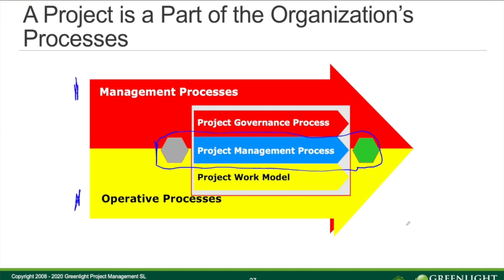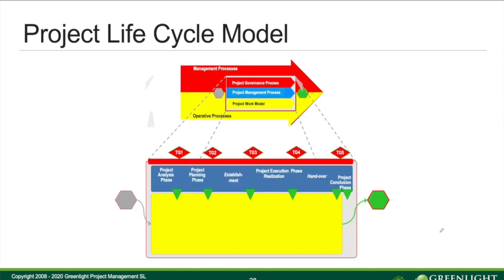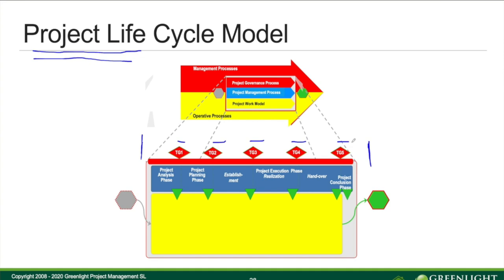So we then also have the blue color, and the green color represents the deliverables we will have from the project. In the GPMM model, we divide all processes into these three levels — the red, the blue, and the yellow level. The whole lifecycle starts here and ends here, with decision points: target zero, target one, target two, target three, target four, and target five, to decide whether we should continue or not with the project.